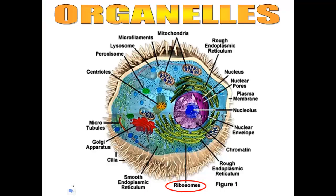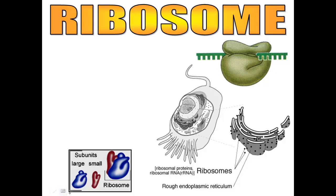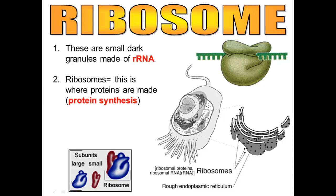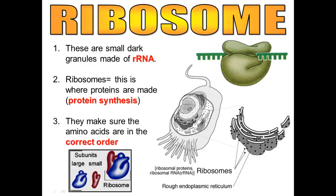Next we'll talk about ribosomes. A ribosome is a very small organelle. It doesn't have a double-layered membrane. It's made by the nucleolus, as we already know, and it's made up of rRNA and proteins. What ribosomes do is they make proteins. The nucleolus makes ribosomes, and the ribosomes make proteins — making sure that the amino acids are in the correct order for the proteins to do their job.